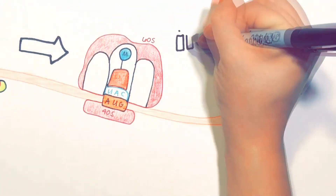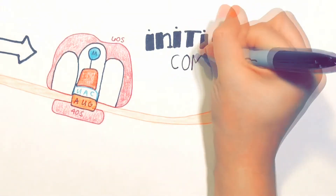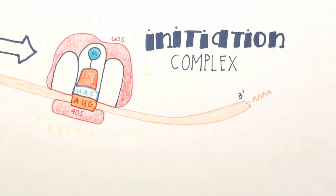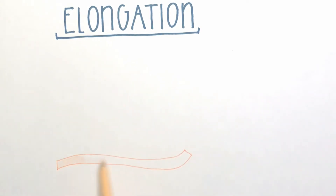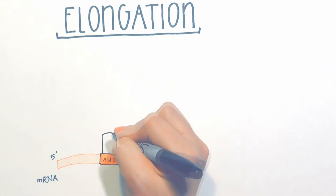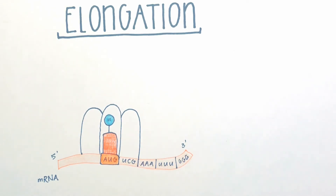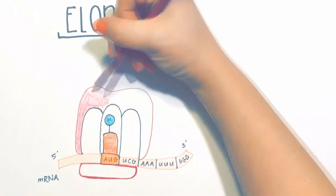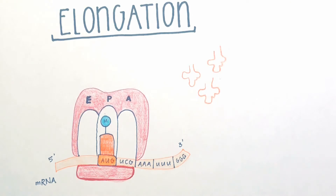All the initiation factors are released, and this forms the initiation complex, completing the ribosome. The second stage of translation is elongation. In elongation, we begin working with our completed initiation complex. The ribosome in this complex has three sites: the A-site, where the charged tRNA attaches; the P-site, for the growing polypeptide chain; and the E-site, which is the exit site for the uncharged tRNA.